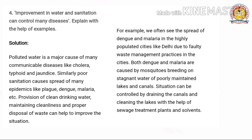Poor quality water is a major cause of many communicable diseases like cholera, typhoid and jaundice. Similarly, poor sanitation causes fear of many epidemics like plague, dengue, malaria, etc. Provision of clean drinking water, maintaining cleanliness and proper disposal of waste can help to improve the situation. For example, we often see the fear of dengue and malaria in highly polluted cities like Delhi. Due to faulty waste management practices in the city, both dengue and malaria are caused by mosquito breeding on stagnant water of poorly maintained lakes and canals. The situation can be controlled by cleaning the canals and the lakes with the help of sewage waste treatment plants and solvents.